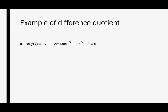Let's look at some examples. First we're given a linear equation, and we're just going to look at the definition itself. Given f of x equals 3x minus 5, we're going to evaluate the difference quotient where we leave x as x, and h will always just be h. What I like to do is break up the numerator, because if you put it all in one line, you're much more likely to make a mistake, especially with that subtraction right here.